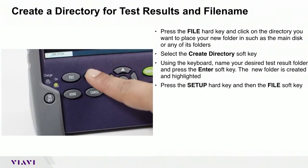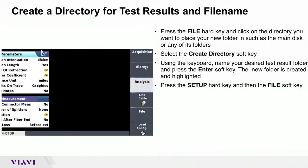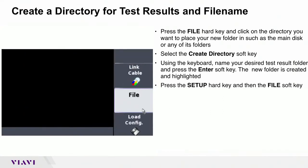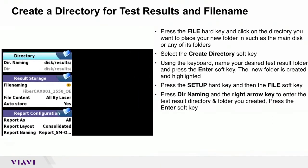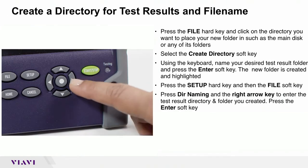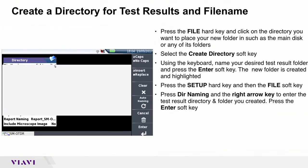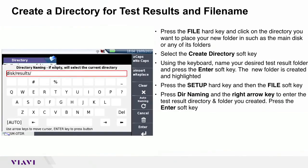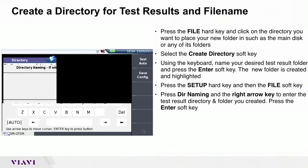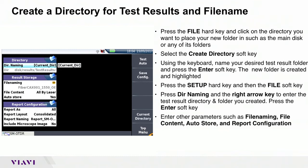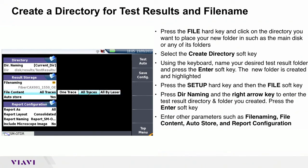Press the SETUP hard key and then the FILE soft key. Press directory naming and the right arrow key to enter the test result directory and folder you created. Press the ENTER soft key. Enter other parameters such as file naming, file content, auto store, and report configuration.